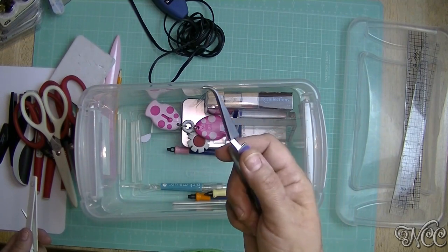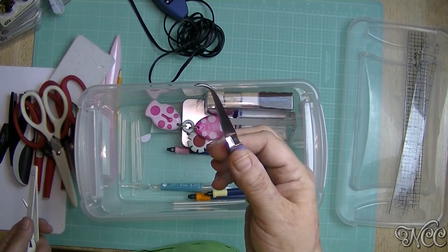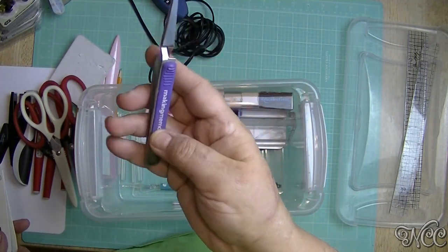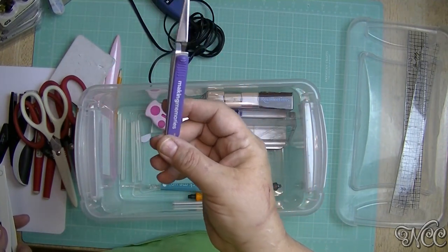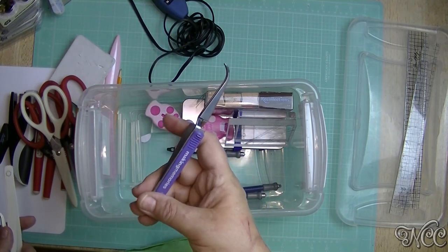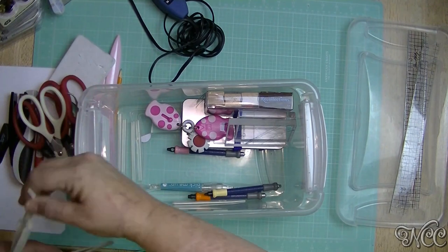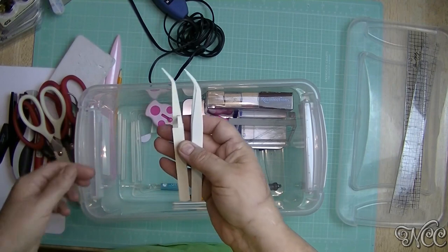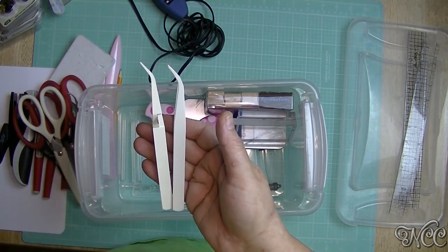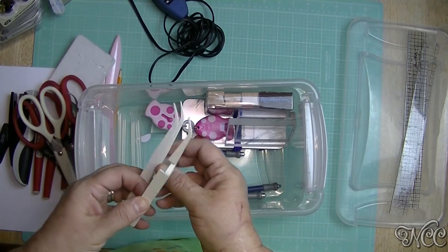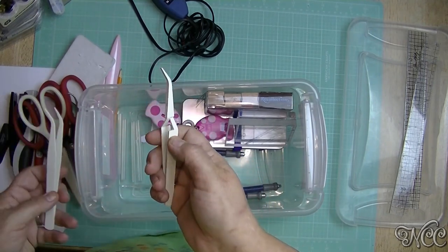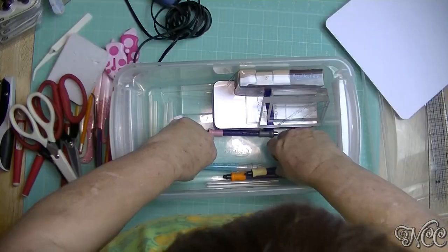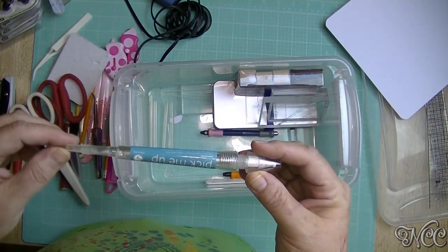These are from Making Memories. I don't even think that company is in business anymore, but these are a reverse tweezer. You squeeze it to open it and then you hold it when you shut it, it's going to hold whatever you are trying to hold. If you're doing embossing, if you put embossing powder on something and you need to heat set it, that's what you need to do. So I have that set. That's the first pair I ever bought and I think I paid 15 or 20 dollars for that set of reverse tweezers, so I'm not getting rid of it because they're still super useful.